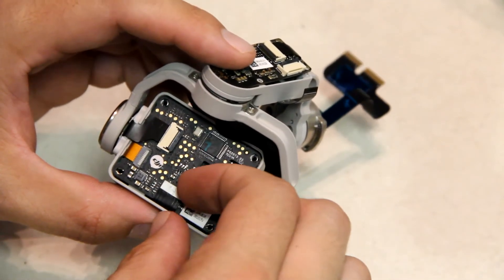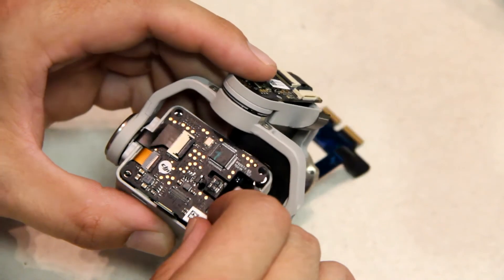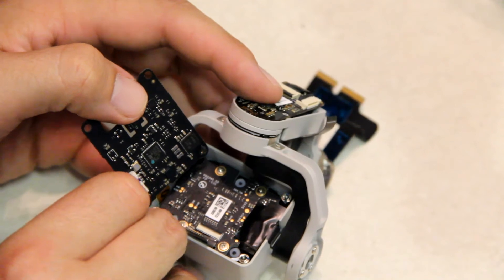Next, take that little cover off. So there's another little ribbon cable right here. We need to pop that off. Now we can swing this little circuit board out of the way.